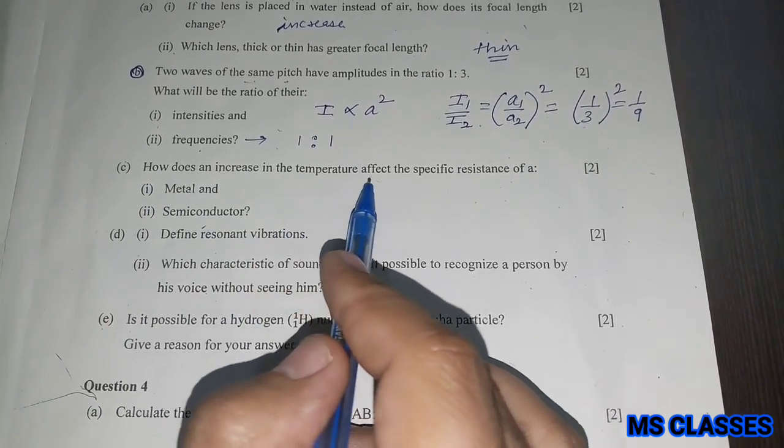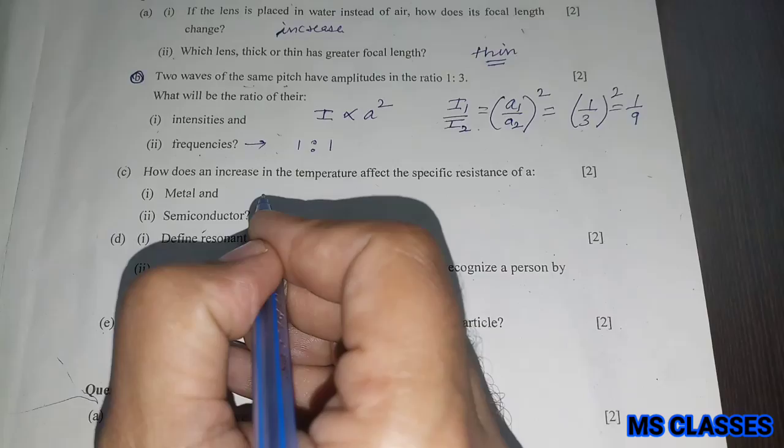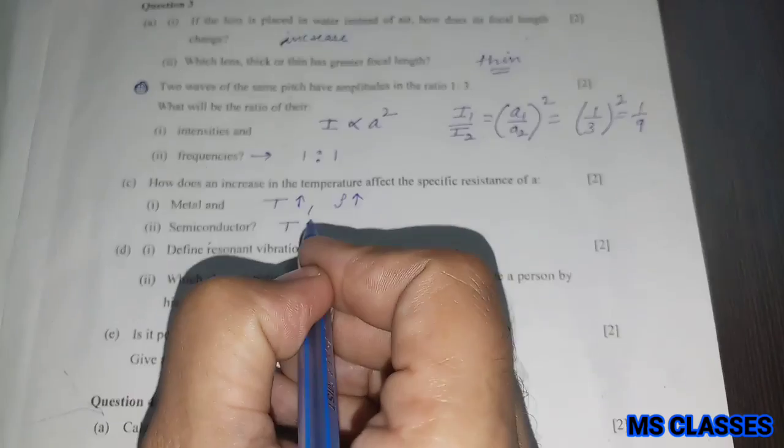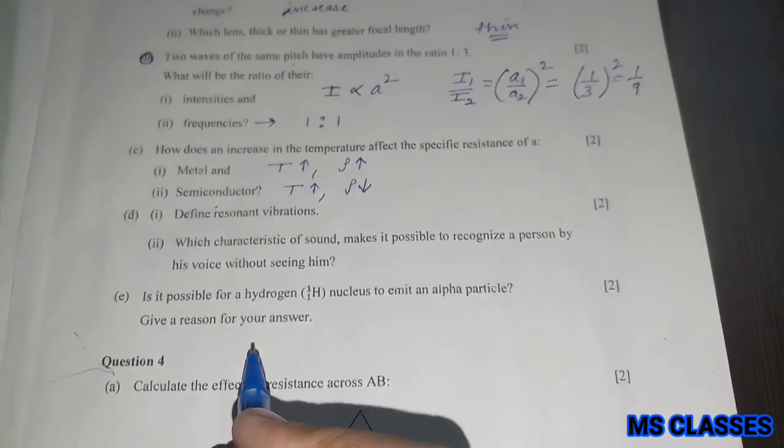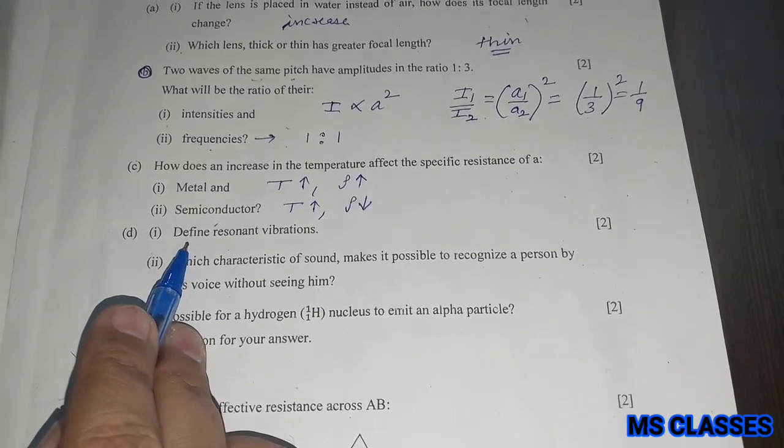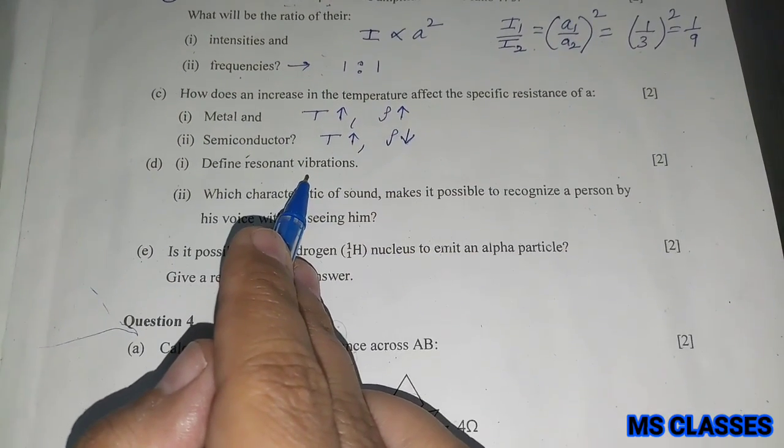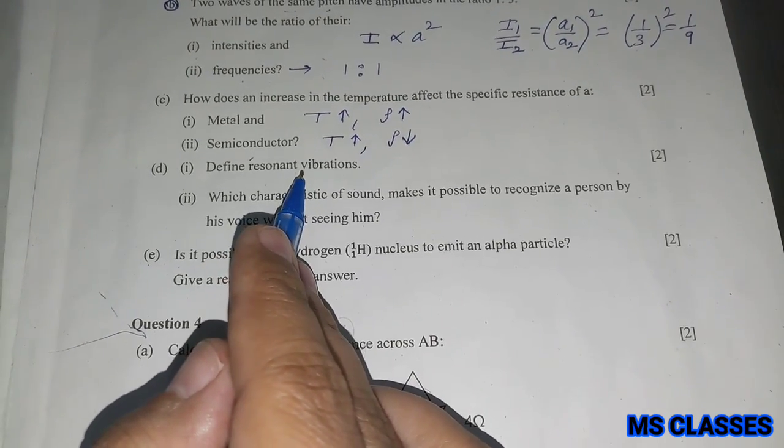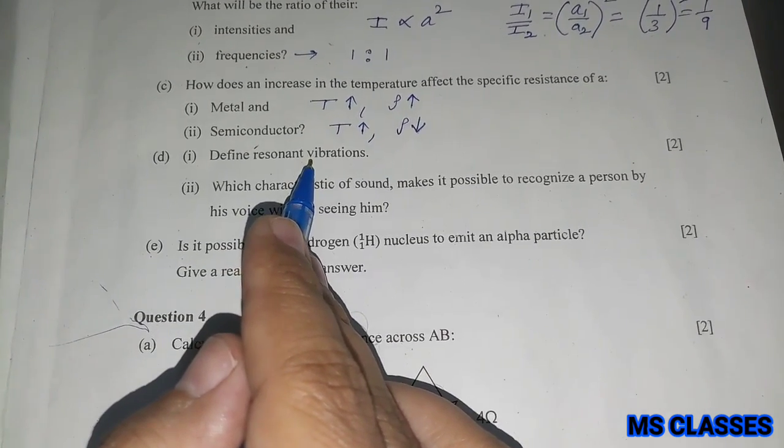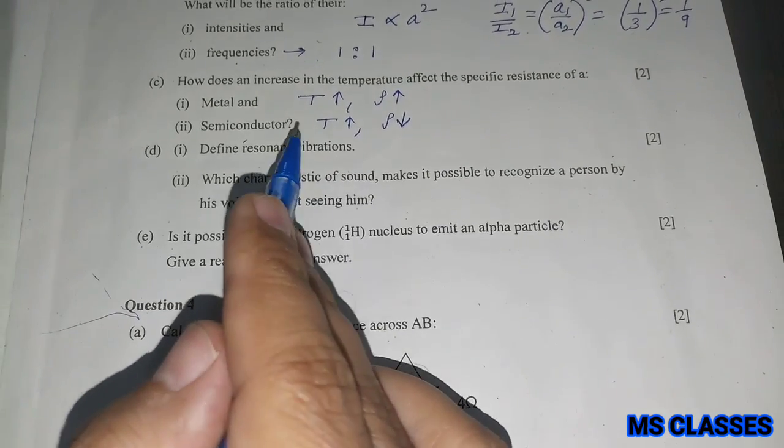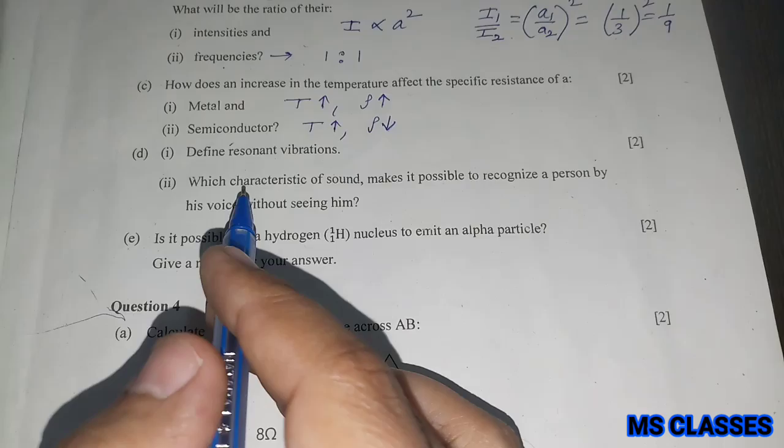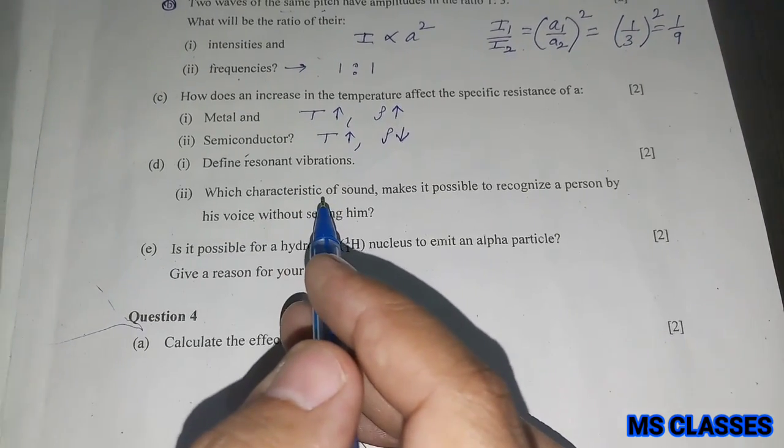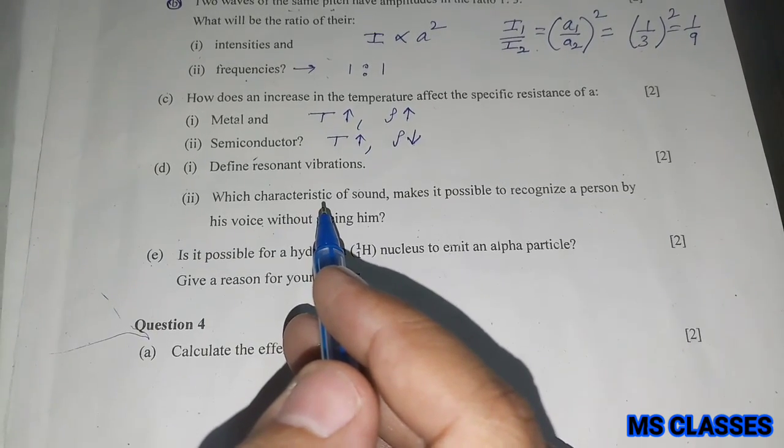How does an increase in temperature affect the specific resistance of a metal? As you increase the temperature, the specific resistance will increase, and for semiconductor it will decrease. Define resonant vibrations: Resonance is a special case of forced vibrations when the frequency of an externally applied periodic force on a body is equal to its natural frequency. The body readily begins to vibrate with an increased amplitude. This phenomenon is known as resonance. The vibrations of large amplitude are resonant vibrations.